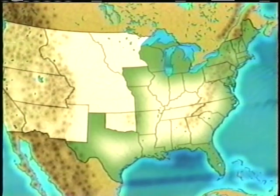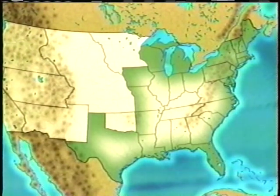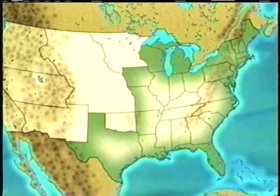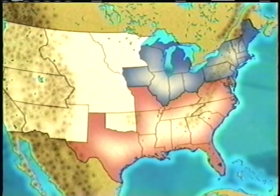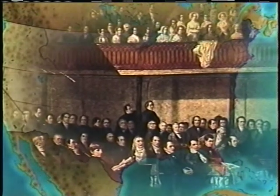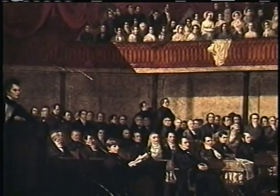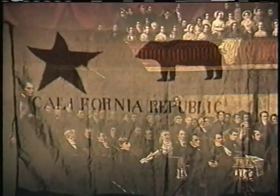In January of 1850, the United States of America contained 30 states. 15 of these were considered northern states and 15 southern. The North, due to its larger population, had a greater number of congressmen in the House of Representatives. But in the Senate, the power between North and South was perfectly balanced, until California applied for admission to the Union as a free state.